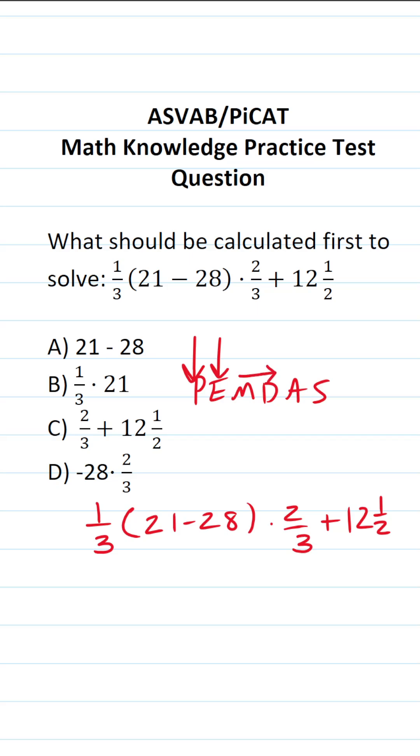Then you're going to do multiplication and division as they appear in the expression from left to right. That is to say, they're treated as equals. And then finally, you're going to do addition and subtraction as they appear in the expression from left to right. They're treated as equals.